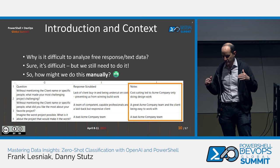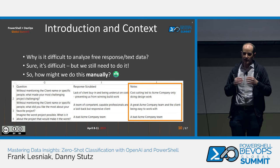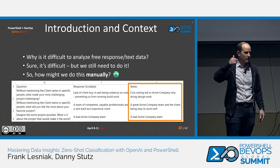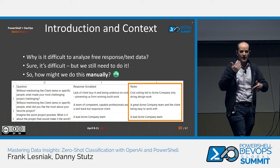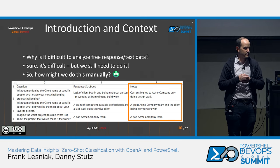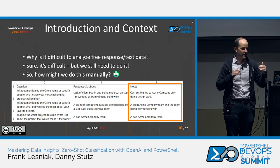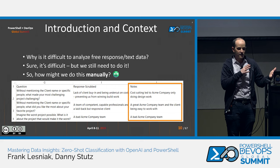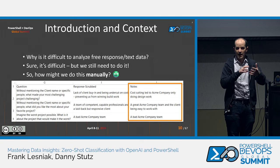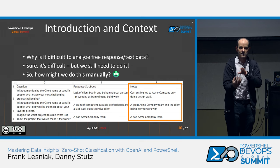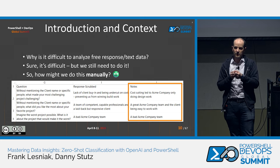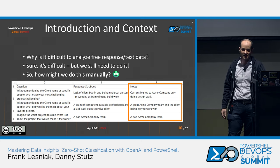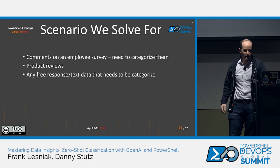I always think it's a good thought exercise when you're going to automate something to think about how you might do it manually. This is an example of me trying to think through some manual curation of some survey results — all contrived — but you can see how I might have looked at the survey response and translated that into more of a summary. Because I'm doing the translation, I can standardize the way I'm translating it and maybe group things together. It's not perfect, and this is an automation conference, so we don't like doing things manually.